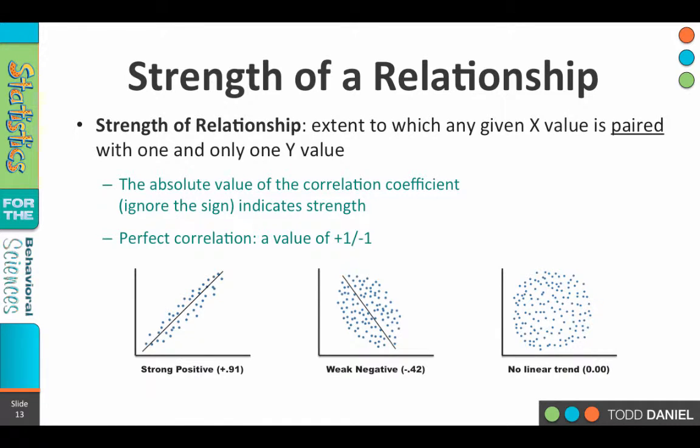Now the strength of the relationship is the extent to which any X value is consistently paired with one and only one Y value. This strength of the relationship is measured by the absolute value of the correlational coefficient. So just look at the number and ignore the sign to determine the strength of the relationship. Now if two variables are perfectly correlated, their value will be either positive one or negative one. And the closer that the dots, the scatterplot dots, are to a straight line, the stronger the relationship we're seeing.